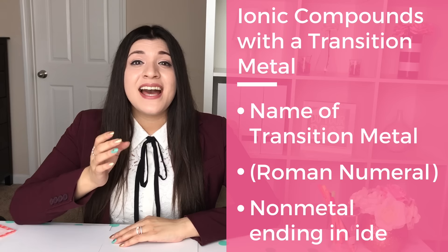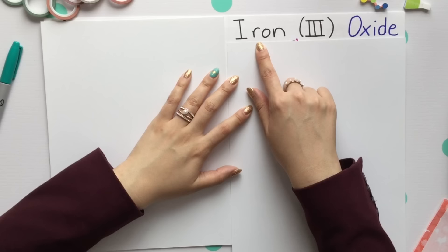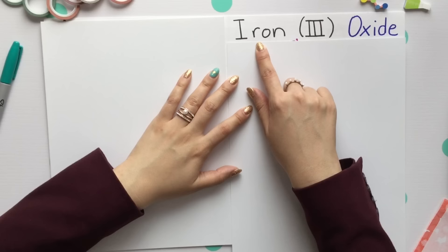The second one is ionic compounds with a transition metal. This consists of the name of our transition metal, a Roman numeral in parentheses, and a non-metal ending in ide. Our transition metal is iron, and our Roman numeral is 3.